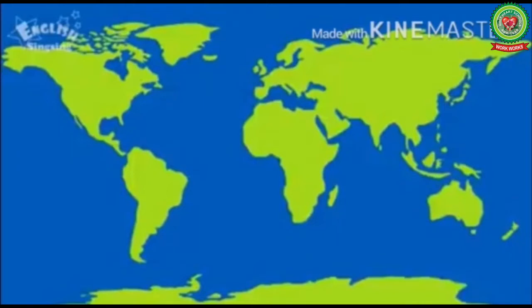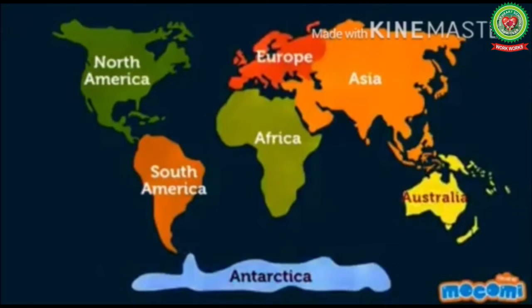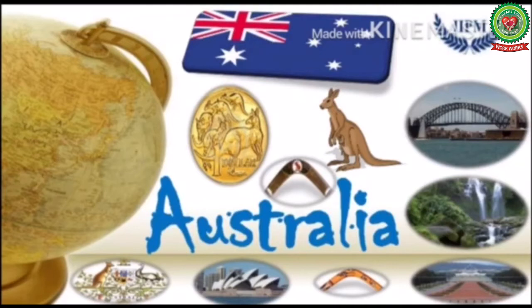The huge water bodies are called oceans. The huge land masses on the earth are called continents. These are Asia, Africa, North America, South America, Antarctica, Europe, and Australia. Australia is the smallest continent of the world. It was discovered in the late 17th century.